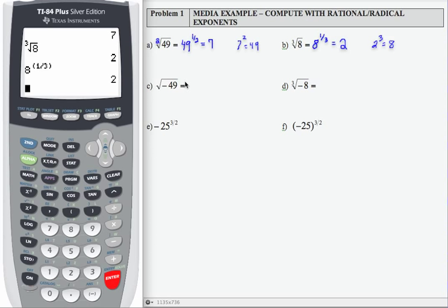Now for part c, I have the square root of negative 49. Well what times itself gives me a negative 49? There is no real number that I can multiply times itself that will give me negative 49. But let's convince ourselves by looking at what the calculator says.